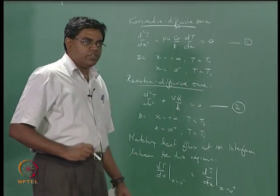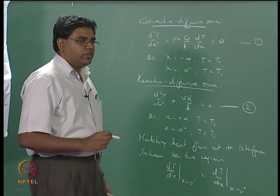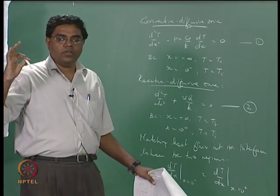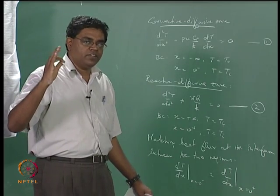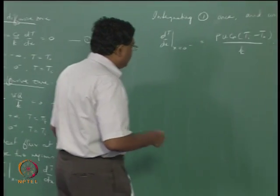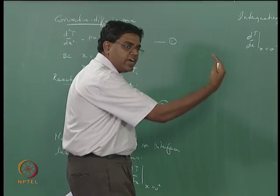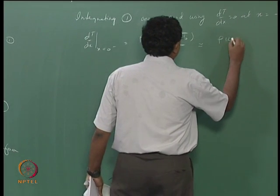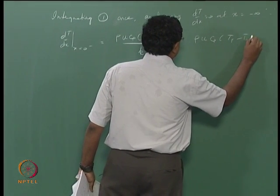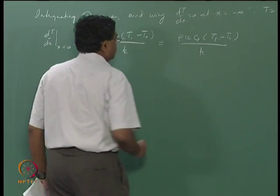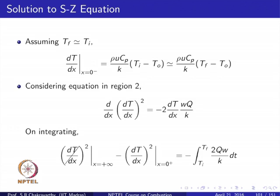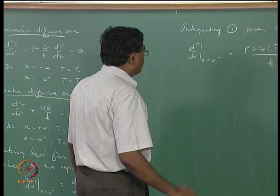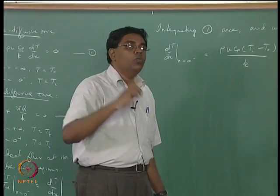There are a couple of tricks we will talk about. In both cases we try to replace Ti by a known temperature without incurring too much error. Looking from the preheat zone toward the reaction zone at the interface, we say the slope is approximately ρuCp(Tf – T0) divided by k. The temperatures we are actually given are Tf and T0; Ti is unknown, and we are trying to replace that unknown by something known without incurring too much error.